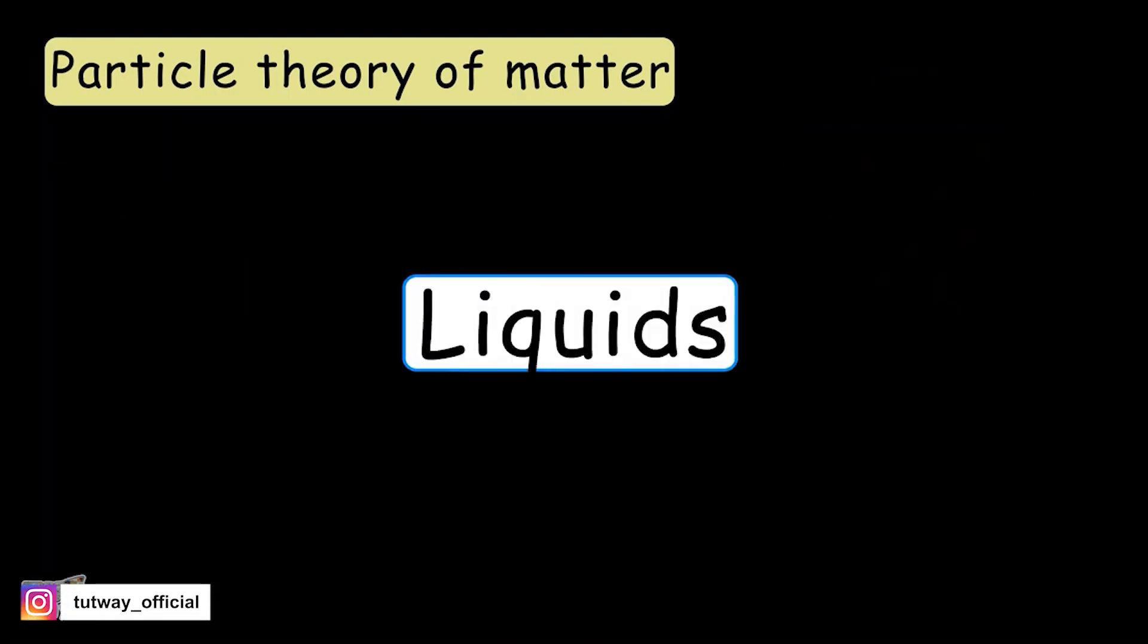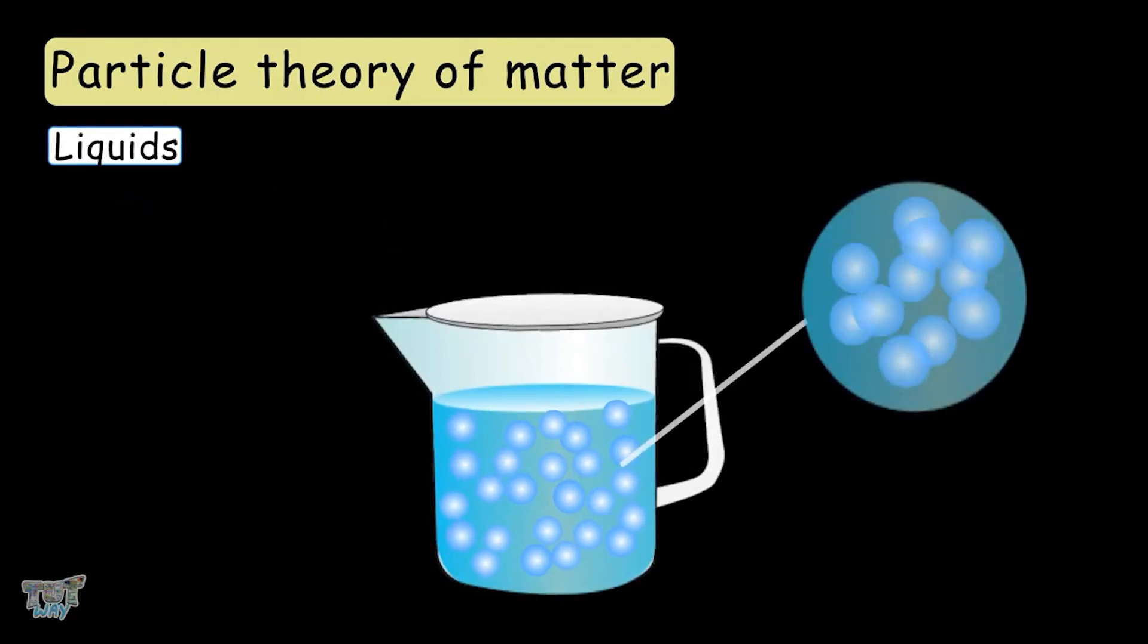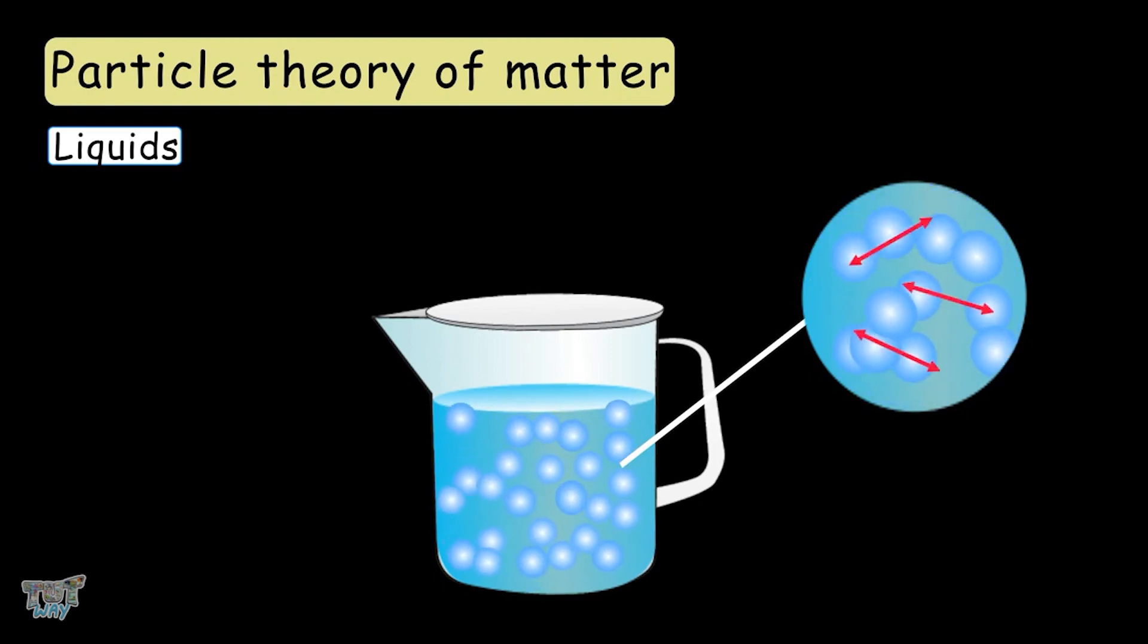Next are liquids. Liquids are also made up of tiny particles. But, in the case of liquids, particles have larger empty spaces between them than solids. This is why the attraction between particles or liquids is lesser than that of solids.